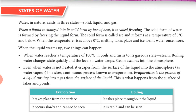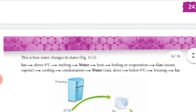After melting, when we apply heat to water, it slowly starts to boil. This is called the boiling process. The boiling point is 100 degrees Celsius, and above 100 degrees, the water starts to convert into water vapor. This process is called evaporation.